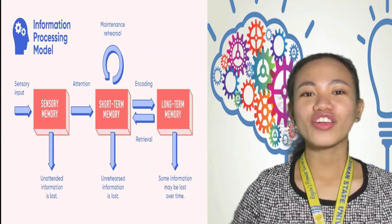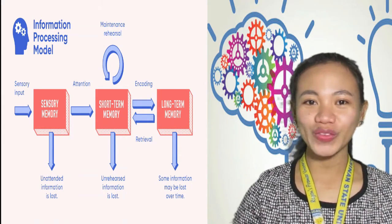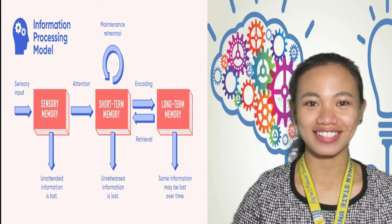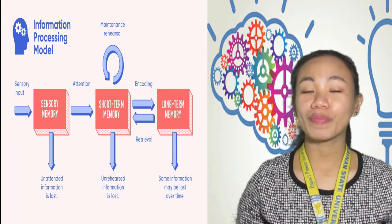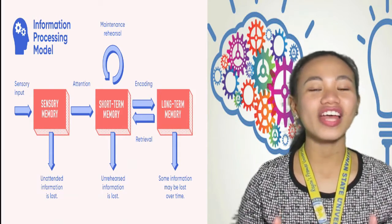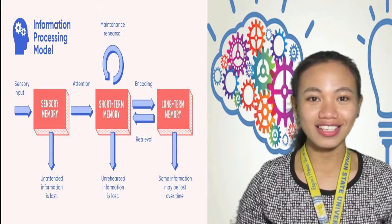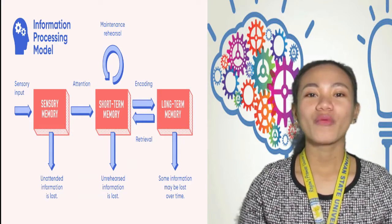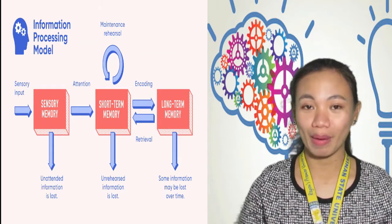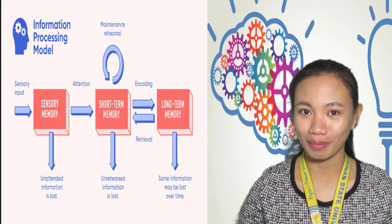The premise of Information Processing Theory is that creating long-term memory is something that happens in stages. First, we perceive something through our sensory memory, which is everything we can see, hear, feel, or taste in a given moment. Our short-term memory is what we use to remember things for very short periods, like a phone number. And long-term memory is stored permanently in our brains.